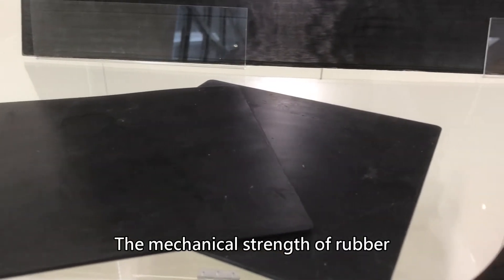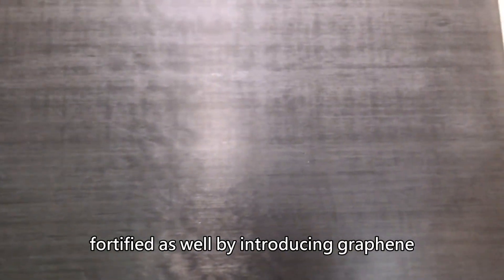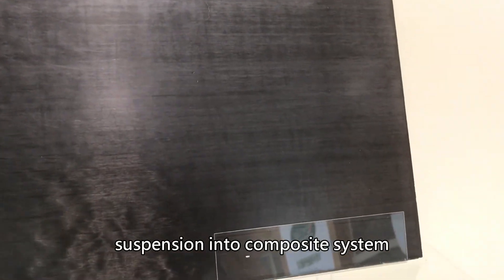The mechanical strength of rubber or carbon fiber composite can be fortified as well by introducing graphene suspension into a composite system.